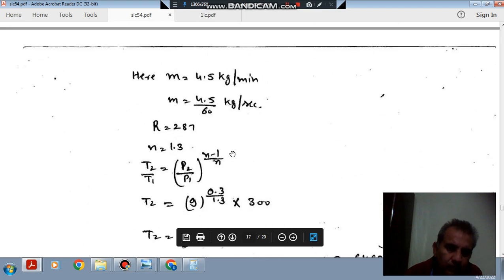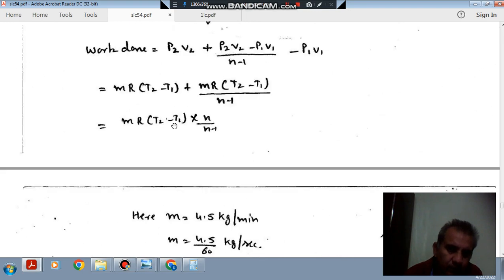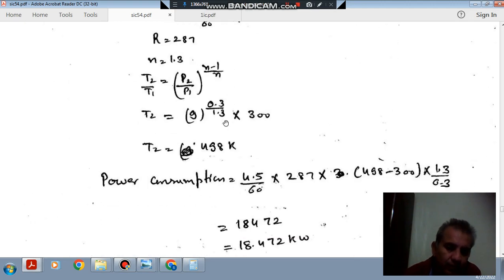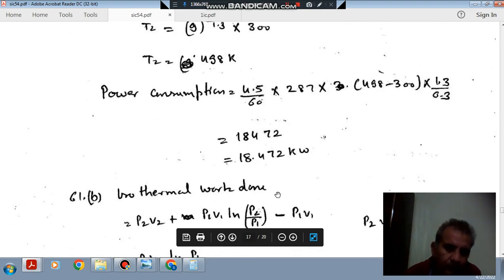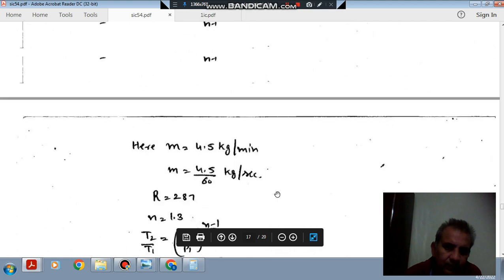Now we can put the value of T2, we have value of T1, R, N, so we can find the power consumption. That is 18.472 kW.